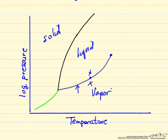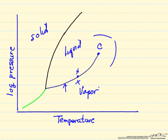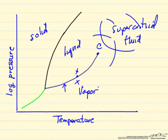The thing that's important to keep in mind, this is the critical point. So this line ends, which means there's no real distinction as we go from here over to here between liquid and vapor. This region up here, instead of referring to as a liquid or a vapor, it's a supercritical fluid.